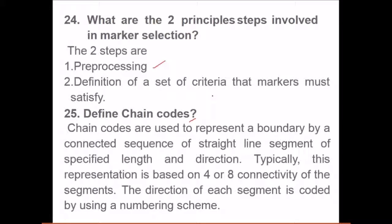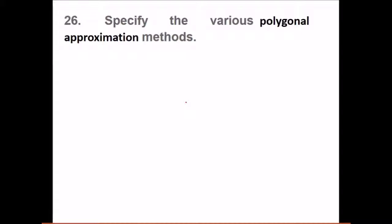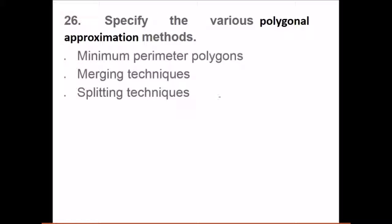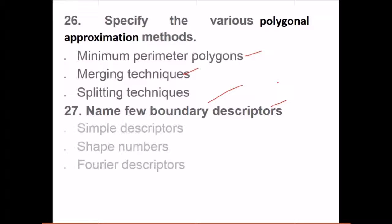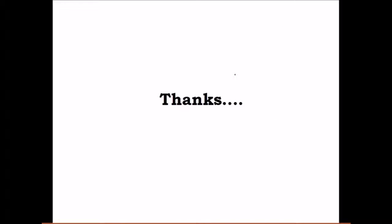What are chain codes? Chain codes are used to represent a boundary by a connected sequence of straight line segments of specified length and direction. Typically, this representation is based on four or eight connectivity of the segments. The direction of each segment is coded using some numbering scheme. Specify the various polygonal approximation methods: we have minimum perimeter polygons, merging techniques, splitting techniques, etc. Name a few boundary descriptors: simple descriptors, shape numbers, and Fourier descriptors. These were a few questions on image segmentation. Thank you so much, take care.